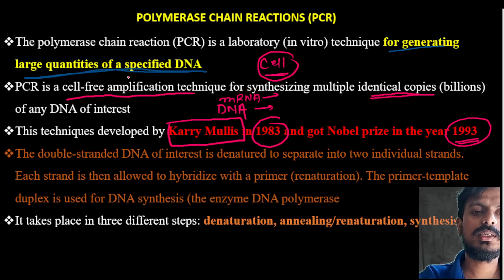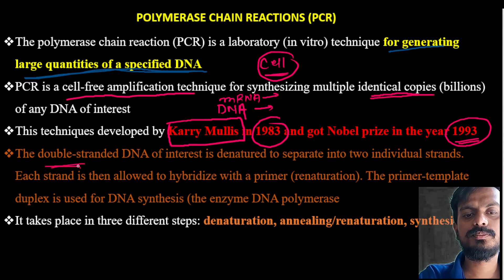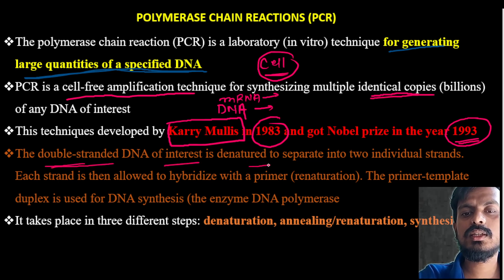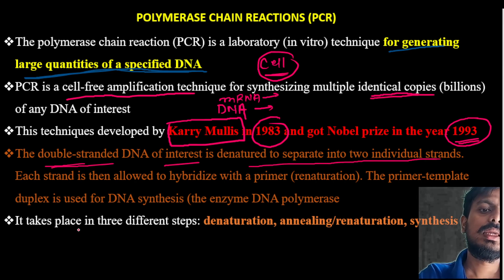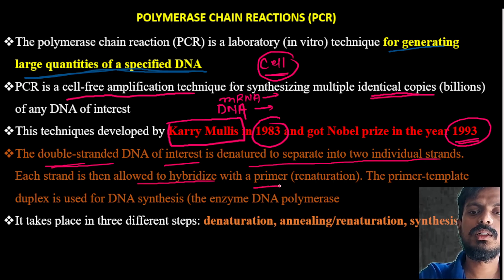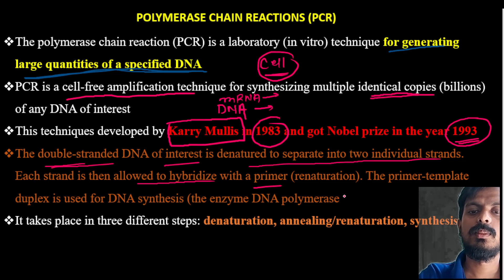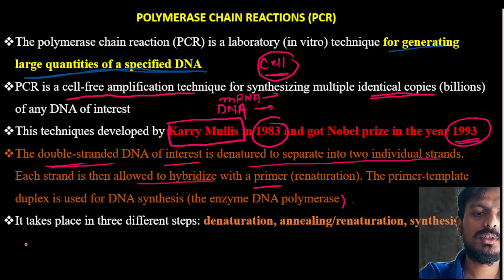This technique basically involves a double-stranded DNA of interest being denatured into two separate strands. Each strand is then allowed to hybridize with a primer, and the primer-template duplex is used for DNA synthesis by the enzyme DNA polymerase.